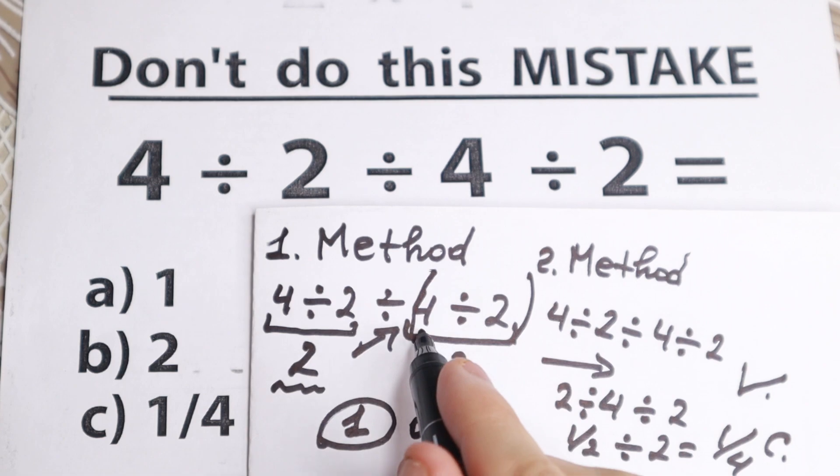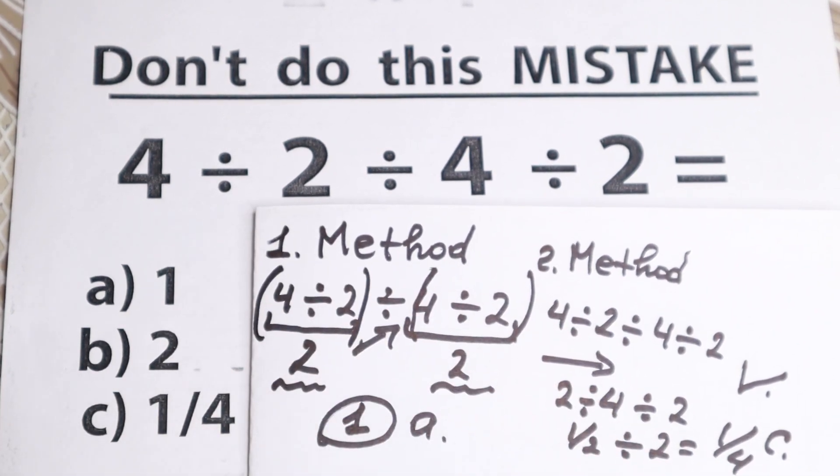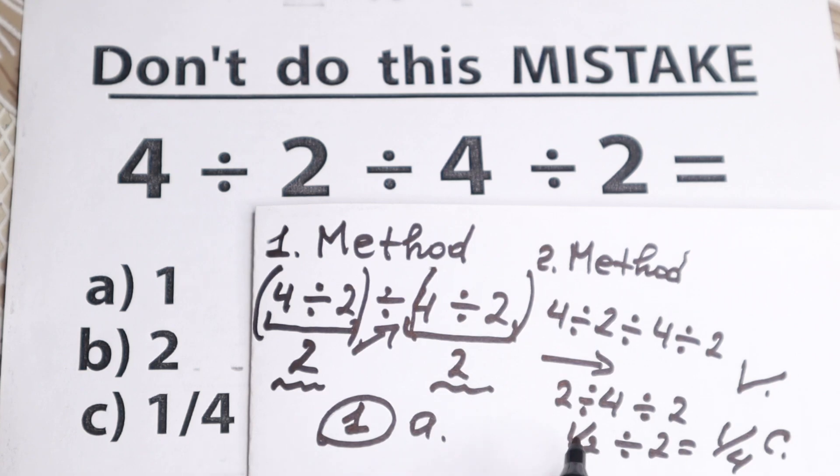If we have parentheses right here, we can start with this, and you can have parentheses right here. You can start with this problem. But in this moment, we don't have any parentheses. So we cannot change the order. We need to go from left to right. We don't have addition and subtraction. We have division. And moreover, if we have multiplication, this method works in this way as well.